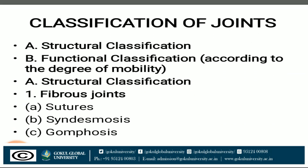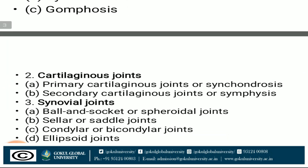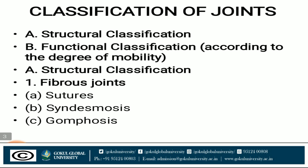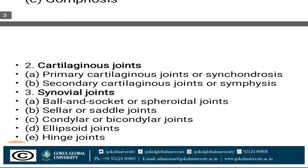Now we will discuss the classification of joints: structural classification, functional classification, and regional classification according to articulating bones. For structural classification, the types are fibrous, cartilaginous, and synovial.